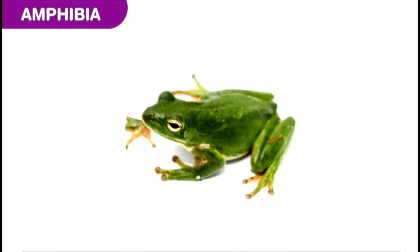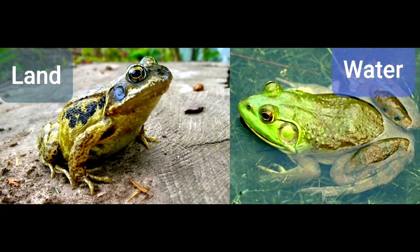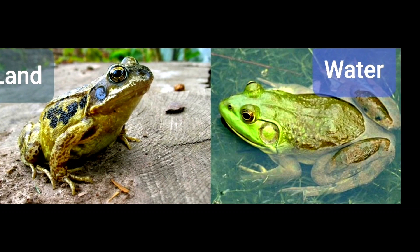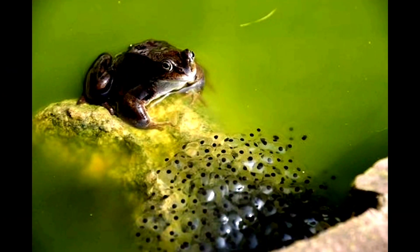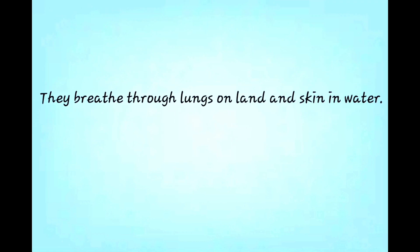Class Amphibia. Animals of Class Amphibia can live both on land and in water, but they need water for reproduction. Their skin is moist and soft. They breathe through lungs on land and through skin in water.